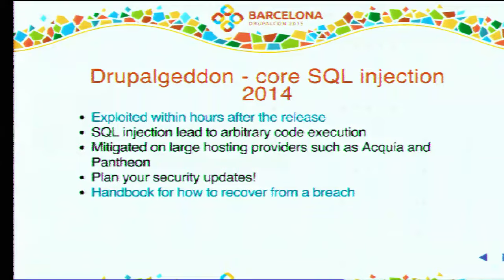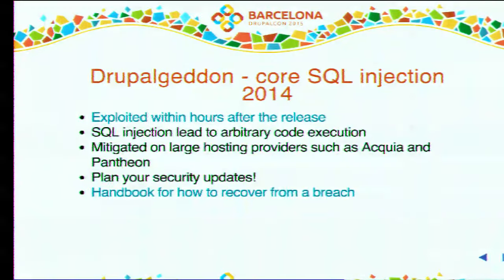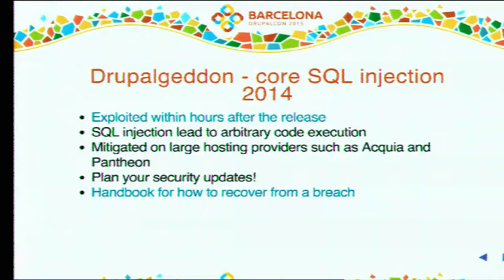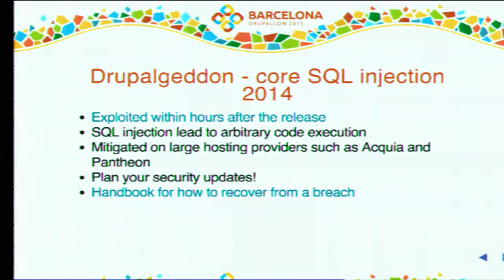It was mitigated on large hosting companies like Pantheon and Acquia — if you were there, you were immune. The lesson learned for the community is to plan your security updates. The Drupal security team now has a schedule: every third Wednesday of the month is the window for security updates for core. We recommend planning a couple of hours on that Wednesday in your schedule in case you have to update. There's also a handbook on how to recover from any breach — in this case we recommended using a backup from before the announcement, as that was really the best way to recover.